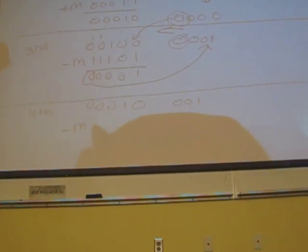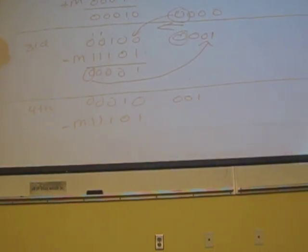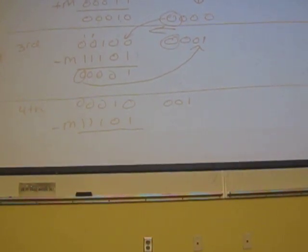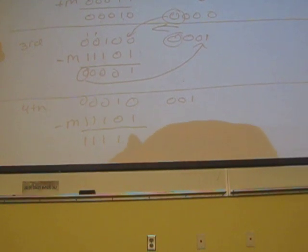We subtract the mantissa, so this becomes 1, 1, 1, 0, 1. The result becomes 1, 1, 1, 1, 1.